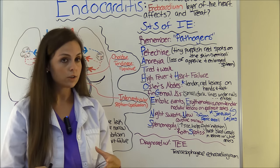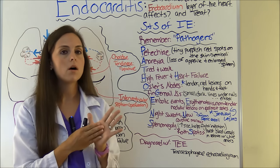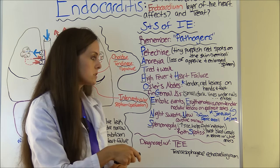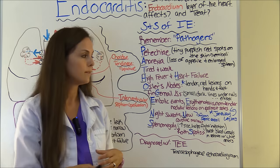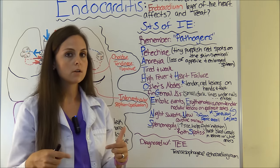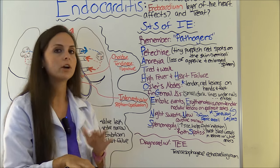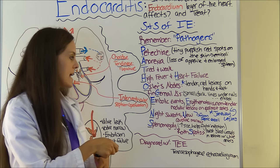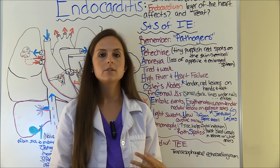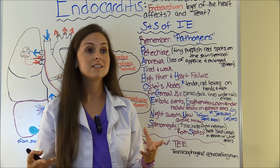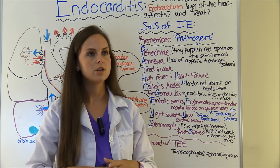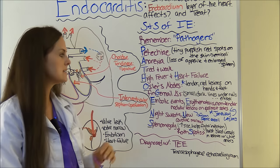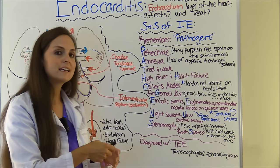A is for arrhythmia. There are also Janeway lesions — non-tender nodular lesions found on the palms of the hands or the soles of the feet. Don't get Osler's nodes and Janeway lesions confused: Janeway lesions are non-tender red nodules found on the palms and soles, while Osler's nodes are tender red lesions on the hands and feet — one's tender, one's not tender. N is for night sweats, because the patient is fighting infection. Another N is for new cardiac murmur — you might hear a mitral valve murmur because the valve is damaged.